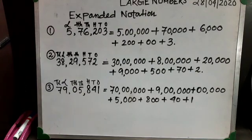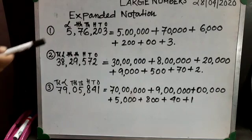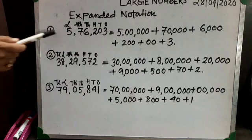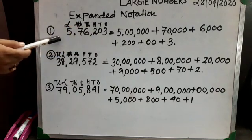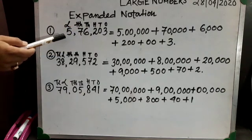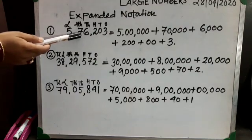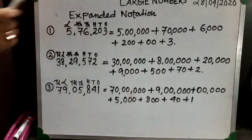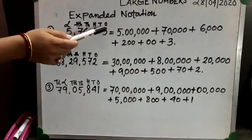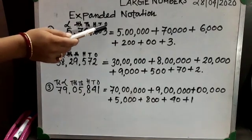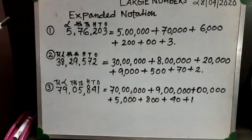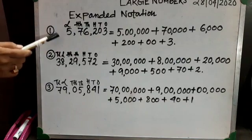For question number one, I have given you one example. The number I have written is five lakh seventy-six thousand two hundred and three. Don't forget to write the place values above the numbers so you can easily understand their place values.